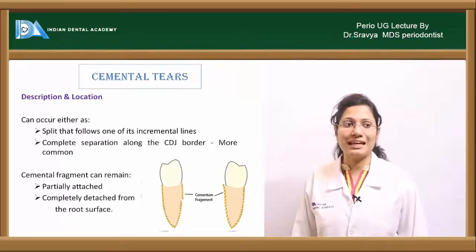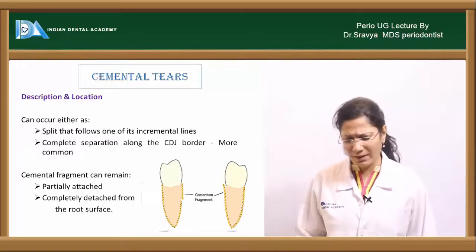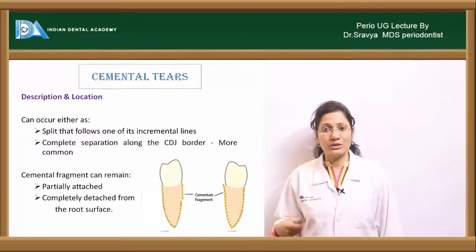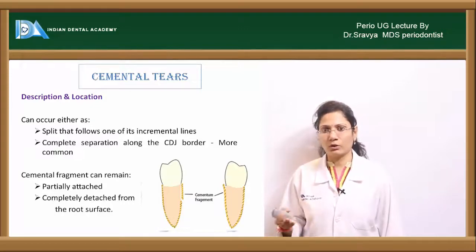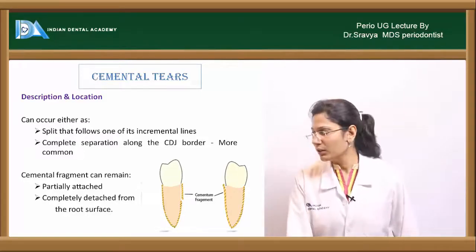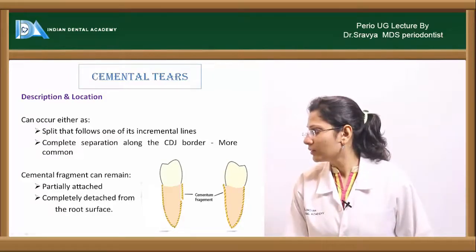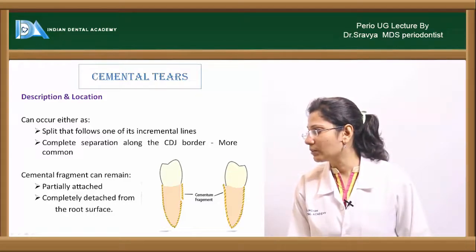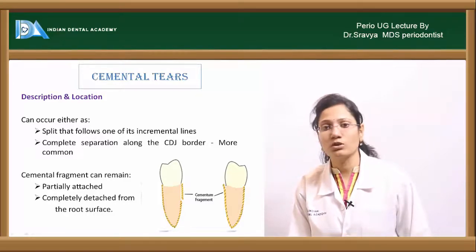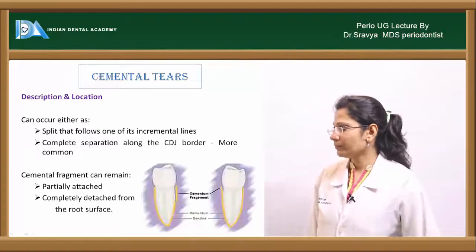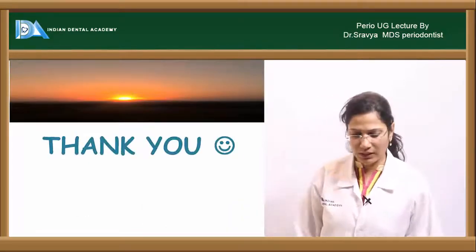Cemental tears can result from excessive occlusal forces, age-related weakening, iatrogenic causes, or periapical pathologies. A cemental fragment may be unattached — free from the root — or still attached, in which case there is potential for repair. This concludes the session on cementum.